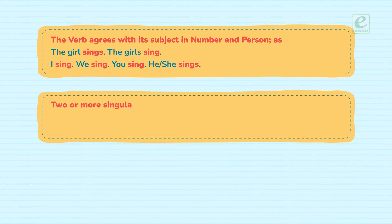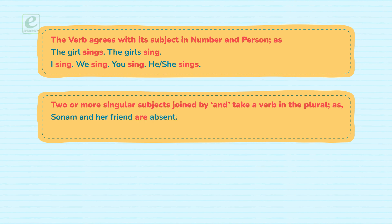Two or more singular subjects joined by 'and' take a verb in the plural. For example: Sonam and her friend are absent. Ram and Lakshman were heroes.